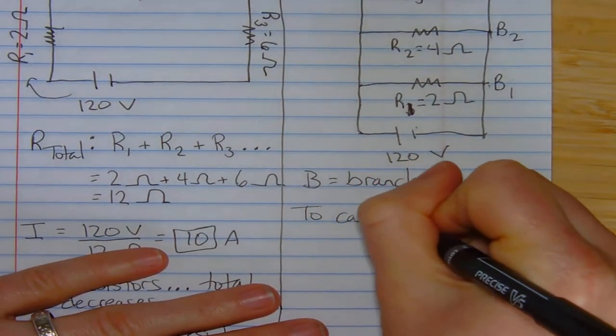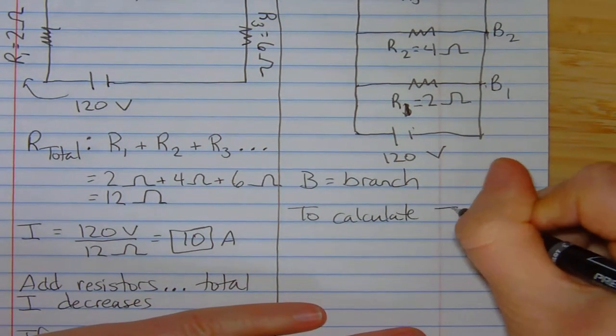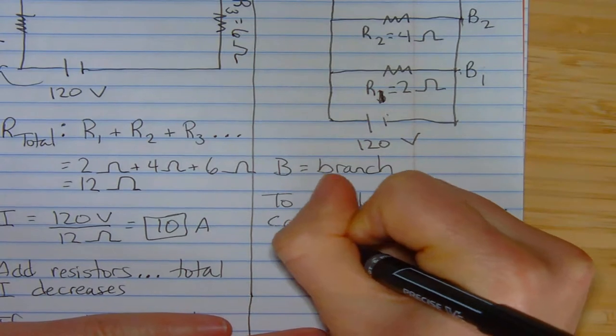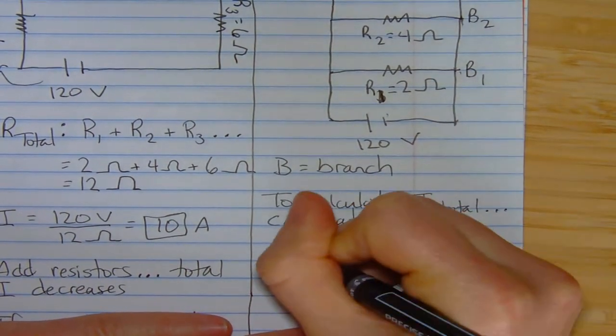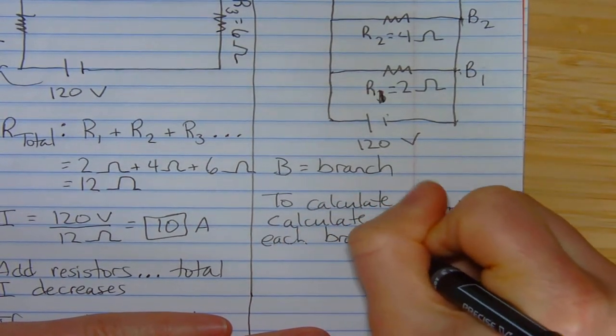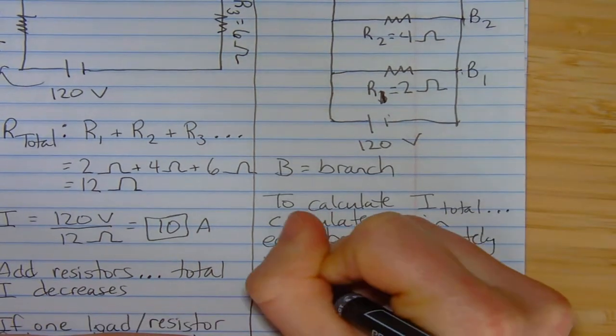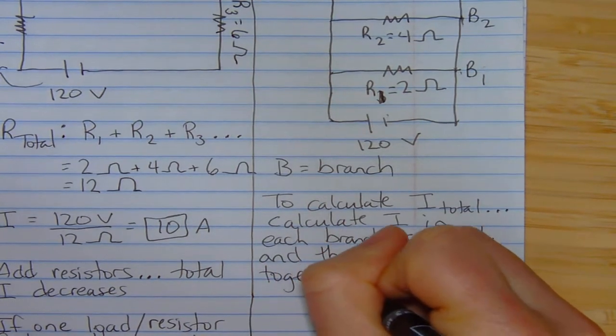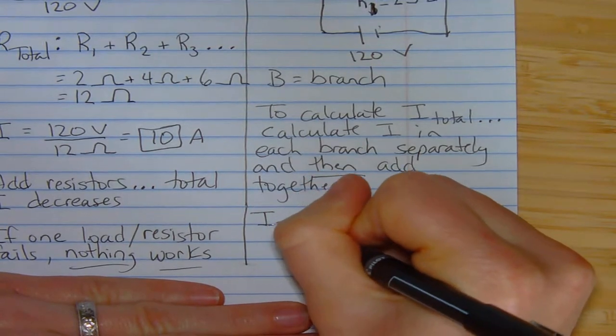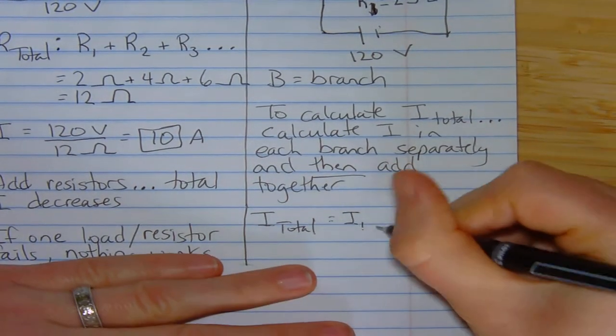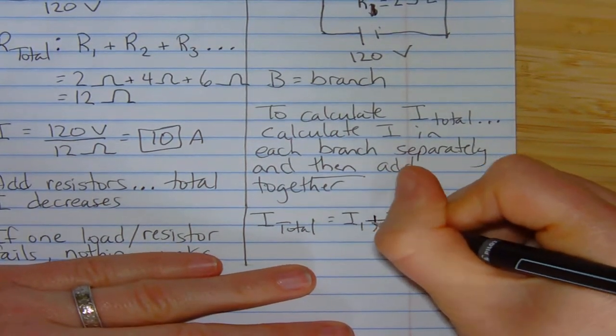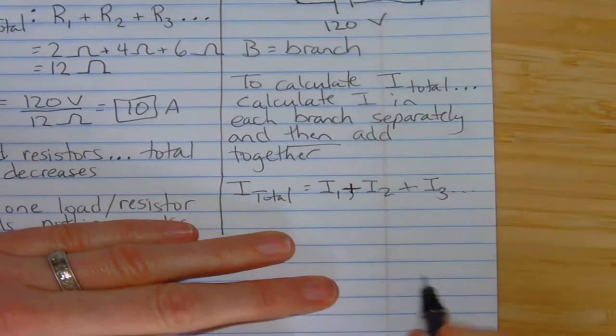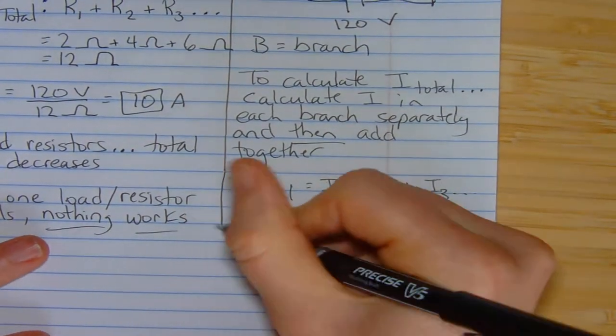To calculate the total current in this type of circuit, here's what you have to do. Calculate the current in each branch, in each branch separately, and then add them together. For this one, your total current would be like I in branch one, current in branch one. Plus the current in branch two, plus the current in branch three, dot, dot, dot. So, we have to handle these independently. So, here we go.